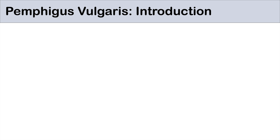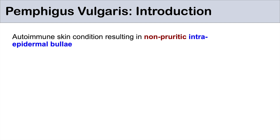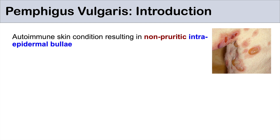To start, we're going to talk about pemphigus vulgaris first. Pemphigus vulgaris is an autoimmune skin condition resulting in non-pruritic intraepidermal bullae. This is by far the more concerning condition between pemphigus vulgaris and bullous pemphigoid. You can remember that pemphigus vulgaris is the bad one — it is vulgar. The median age of onset is about 40 to 60 years old.